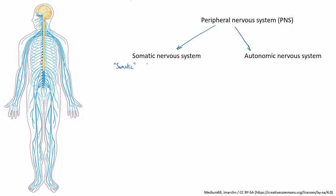Somatic means related to the body. This is the part of the PNS that's under your conscious control. When you choose to eat a sandwich for lunch, the somatic nervous system controls the muscles that allow you to pick up the sandwich, to bite it, and to chew — all things which you're deciding to do.